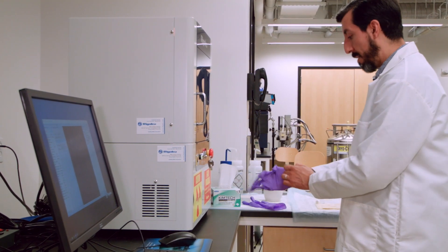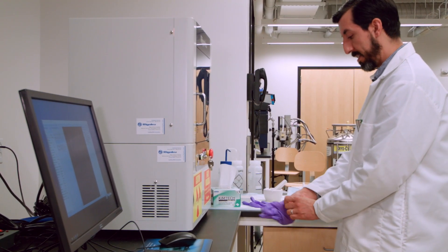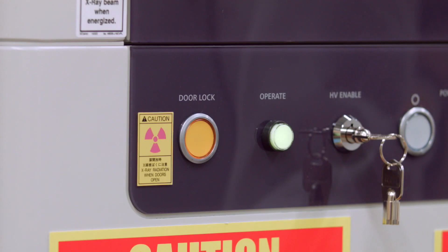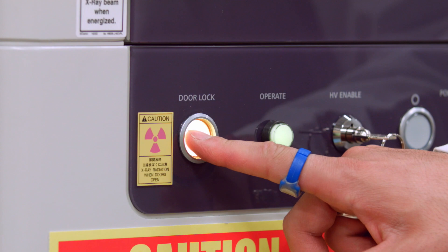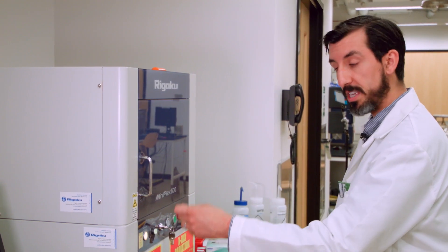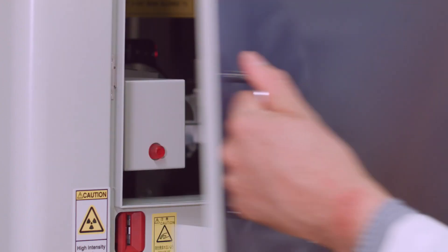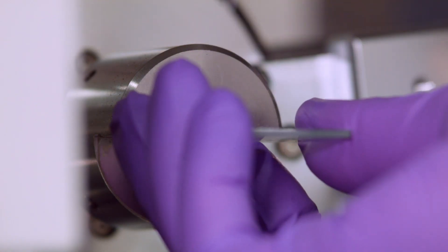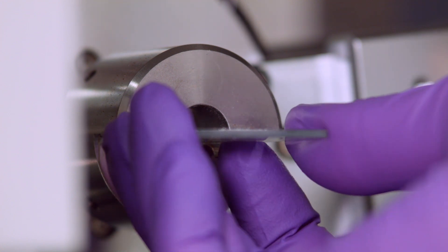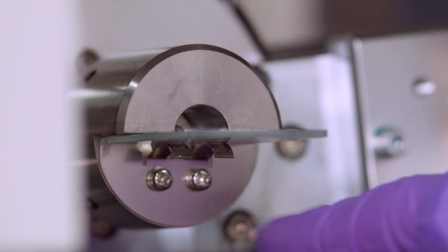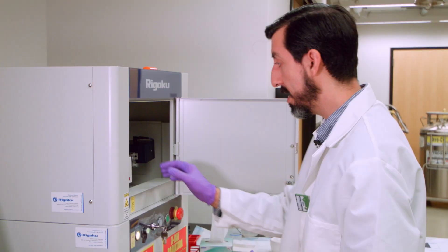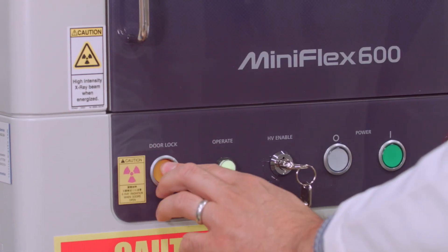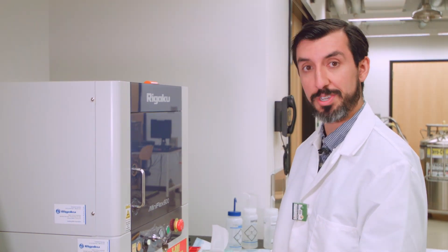Let's place the sample inside the diffractometer. I'm going to use one gloved hand to hold the sample and the non-gloved hand to operate the door. Press the door lock button and once you hear this steady set of tones, the door can be opened. Place the sample inside the clips and push it as far back in the goniometer as you can. Once you feel the sample hit the back of the goniometer, the sample is secure. Close the door and press the door lock button. The diffractometer is now locked and can be used.